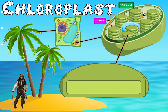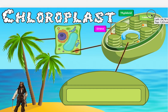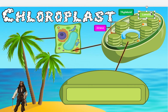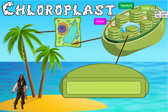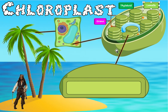Next, you see this little strip connecting the different thylakoids — this part is called the lamella. That's a fun word. So to summarize so far: we have the thylakoid, the grana, and the lamella.